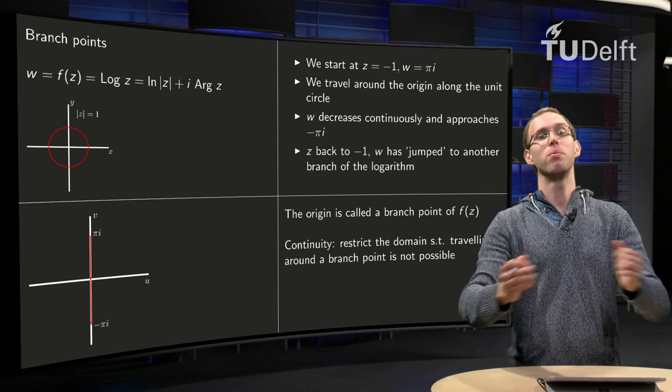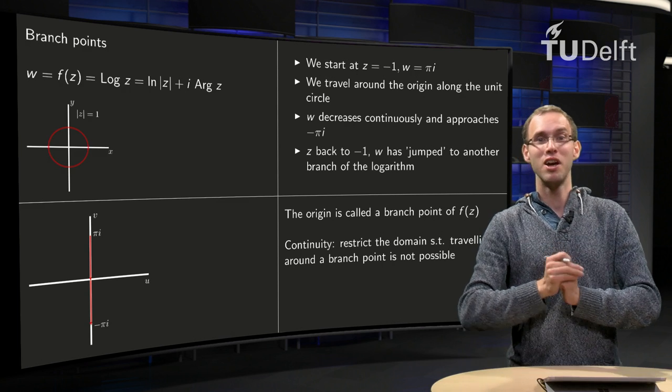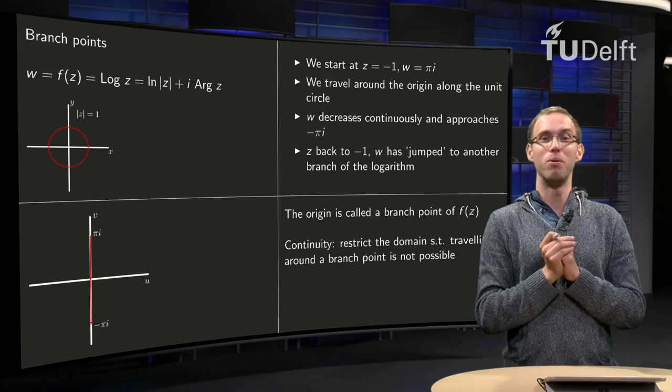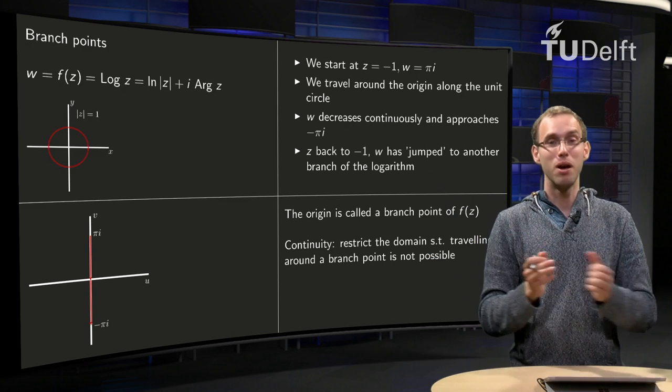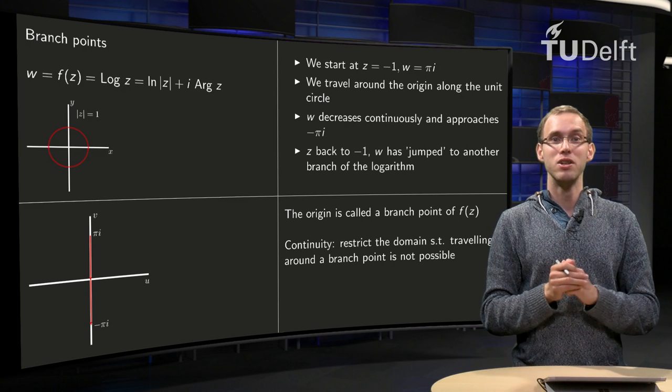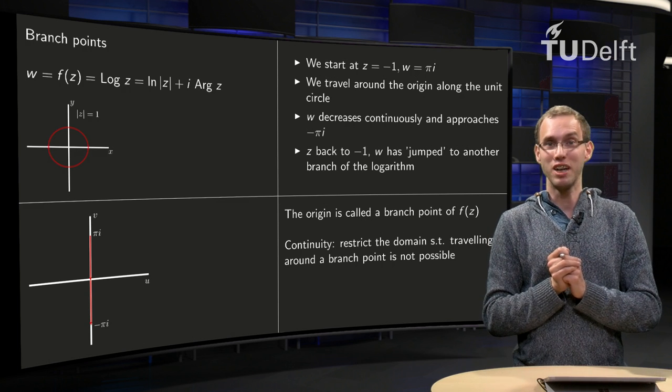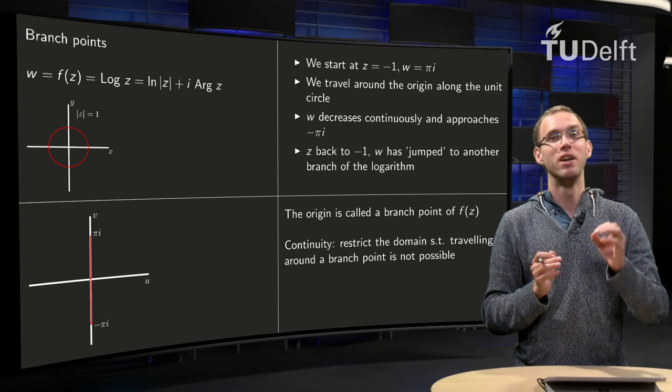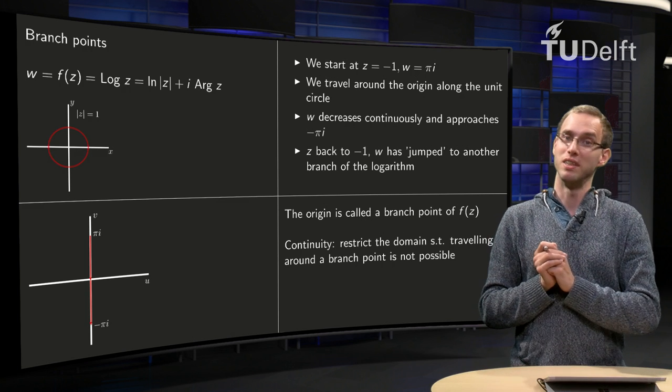So okay, we solved one problem, we solved the multivaluedness, and we got another problem back. We got a branch point in the domain. So how are we going to solve the second problem with the branch points? That will be the subject of a next video.